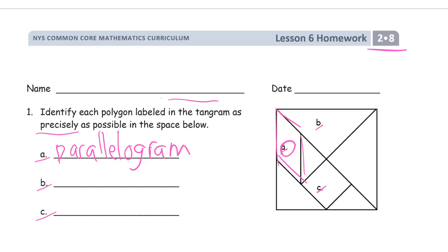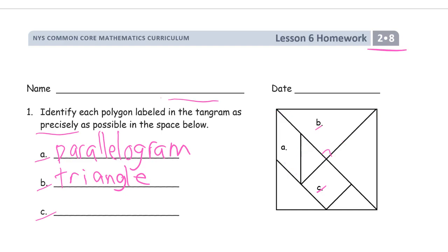For shape B, we could call it a polygon because it's flat, has all straight sides, and is closed, but it's a triangle. It does have a square corner — all the triangles in the puzzle have a square corner. Your teacher may have told you that if a triangle has a square corner, it's called a right triangle.